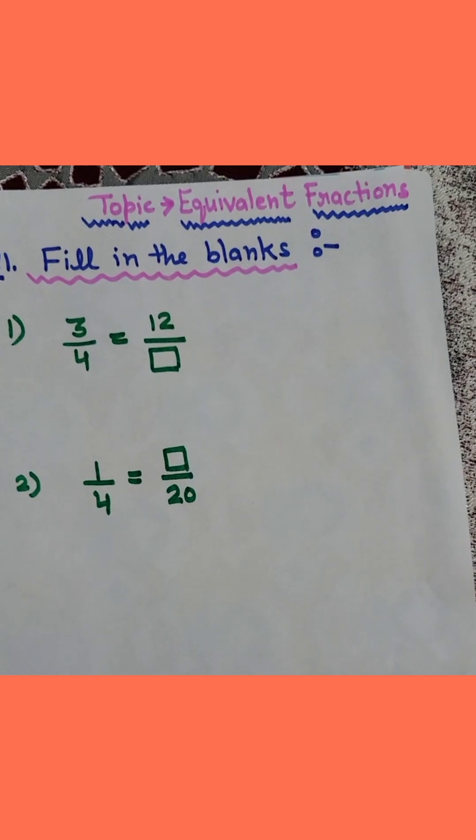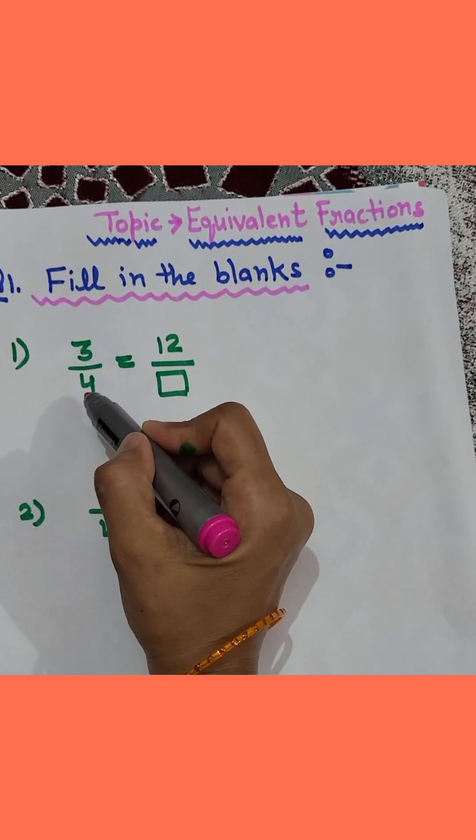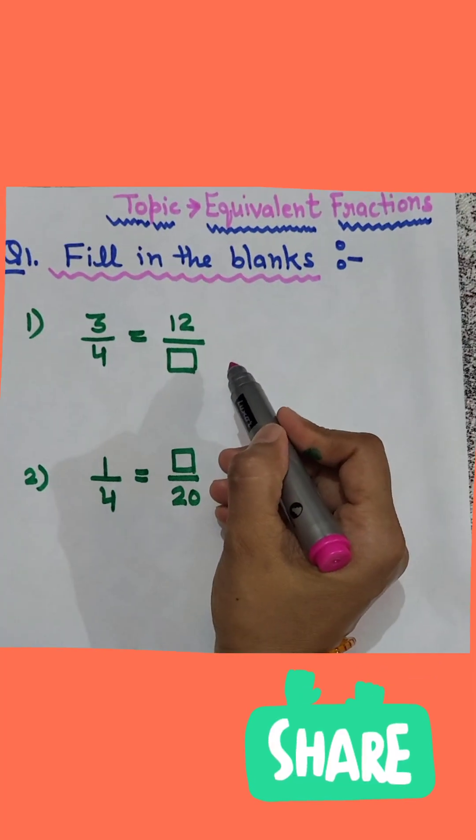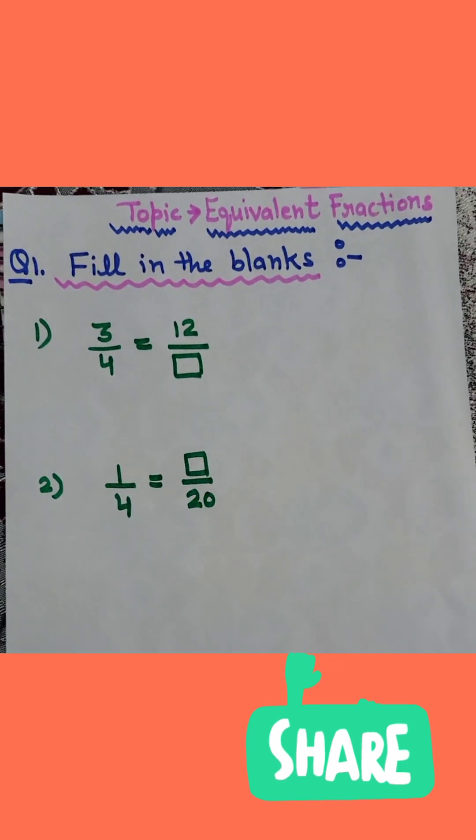When we multiply numerator and denominator by same number we are getting the equivalent fraction of that fraction.